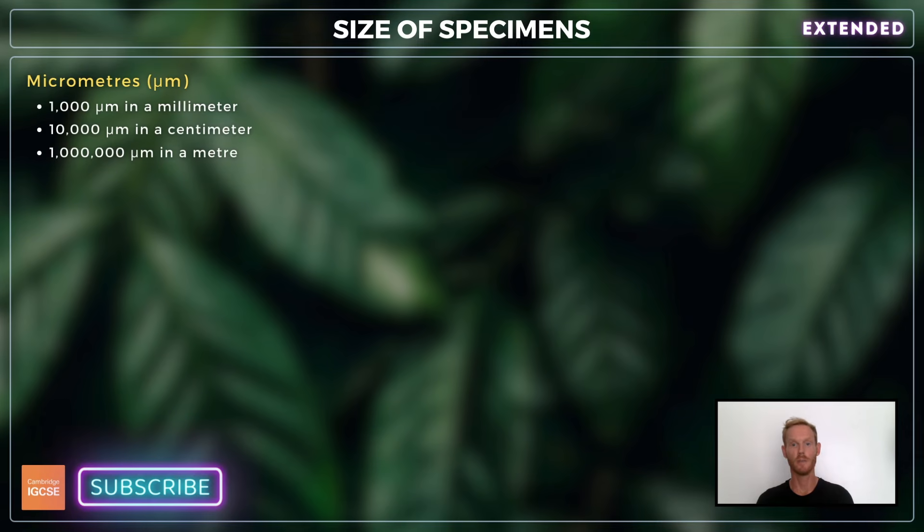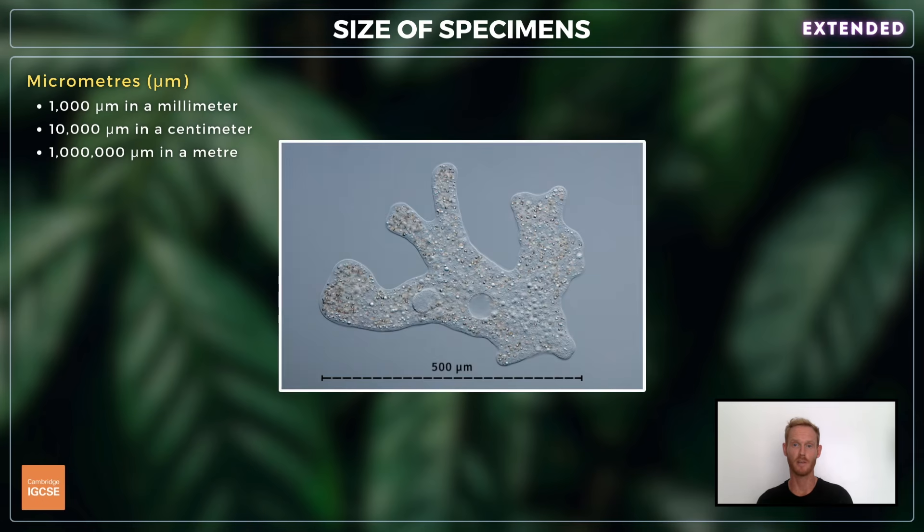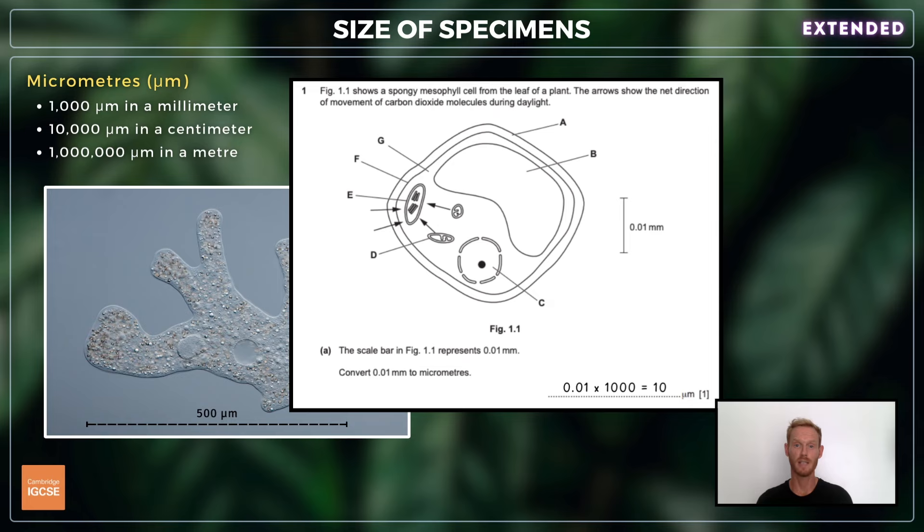So far we've used millimetres and centimetres as units, but in order to measure much smaller specimens, for example the organelles in cells, micrometres or microns are used. There are 1000 micrometres in a millimetre, so in order to convert millimetres to micrometres, simply multiply by 1000. Equally, if you were asked to convert micrometres into centimetres, you'd need to divide by 10,000.